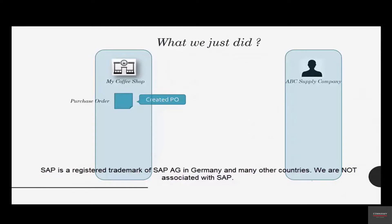Let's recap what we have just done. We wanted some flour for our coffee shop, and we went into SAP using the SAP GUI to create a purchase order. When you create an order on Amazon you see the order number instantly — it's the same as that. But we have to get this purchase order over to the vendor.